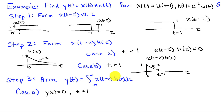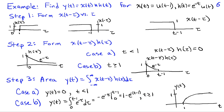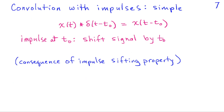In step 3, we find the area under these products. In case A, where x(t − τ) · h(τ) is 0, we have y(t) = 0 for t less than 1. In case B, y(t) is the integral from 0 to t − 1 of e^(−τ) dτ, which gives 1 − e^(−(t−1)), and that applies for t greater than or equal to 1. We can graph this result: the convolution turns on at time 1, rises exponentially, and asymptotes to the value of 1 as t gets large.